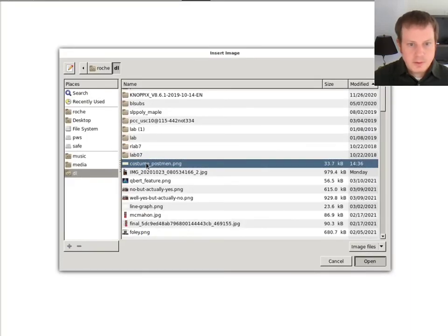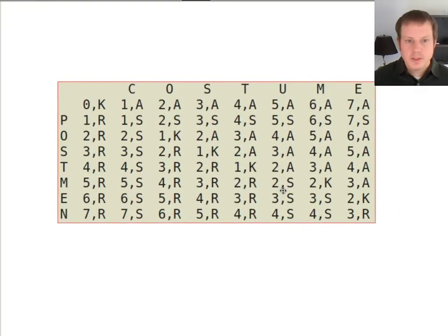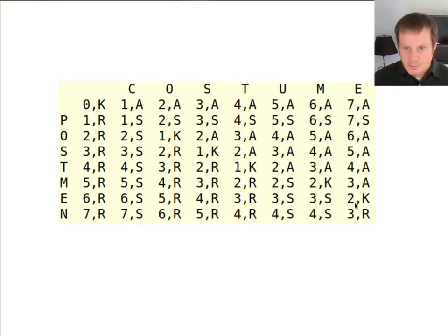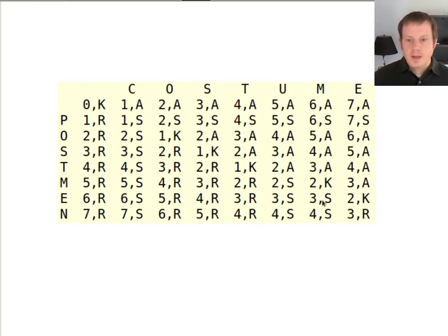I actually wrote some code to do this. Here it is — this is what that same table looks like, and hopefully it matches up, giving a three at the bottom. In my code, R means remove, A means add, S means switch, and K means keep. So R means going up, K means diagonal, A means to the left. We get the same path as before. Sometimes there are ties, so the arrows won't always be exactly the same, but the numbers should all match.